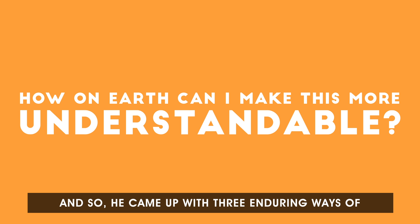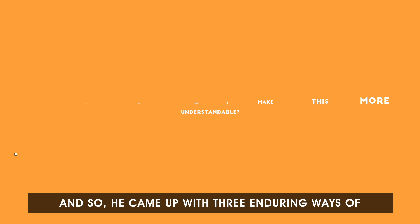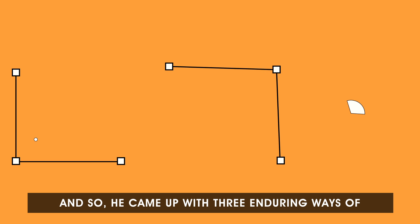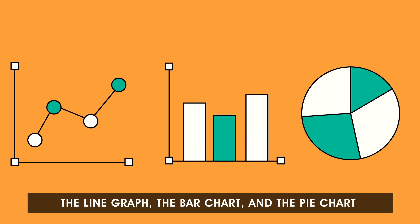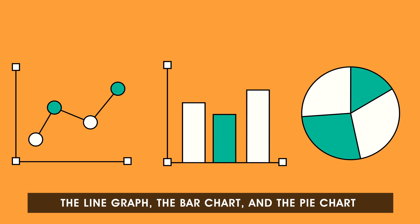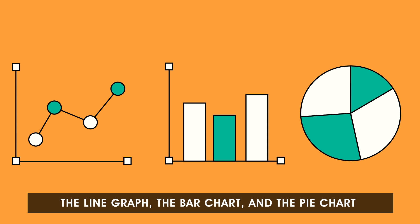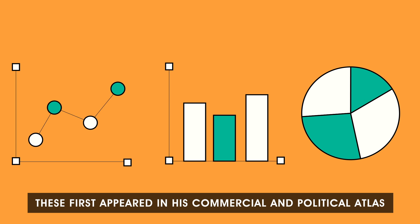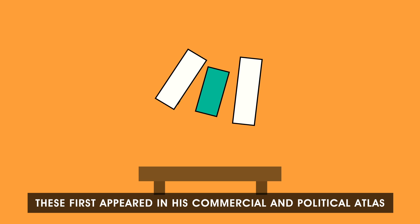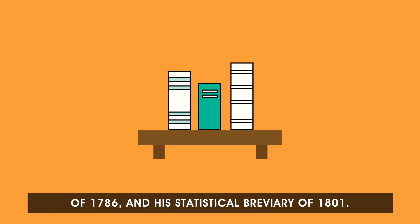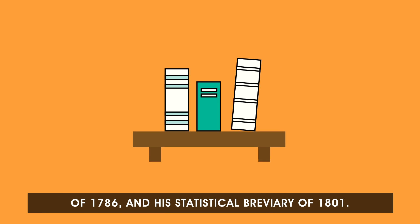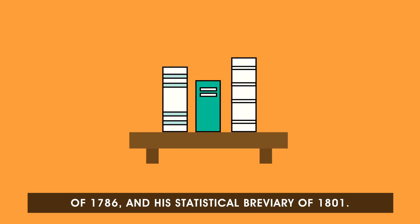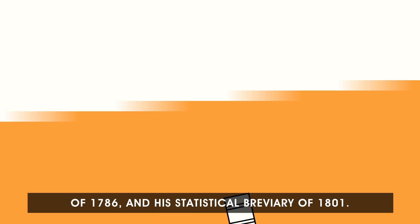He came up with three enduring ways of representing data visually: the line graph, the bar chart, and the pie chart. These first appeared in his Commercial and Political Atlas of 1786 and his Statistical Breviary of 1801.